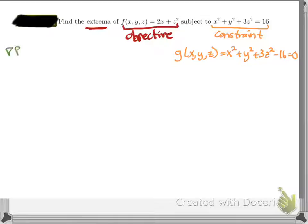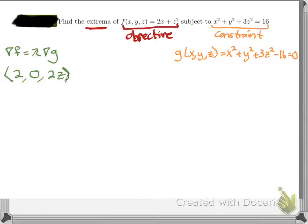We've got the gradient of f is equal to lambda times the gradient of g. So let's find our gradient. In this case, the gradient of f has partial with respect to x, partial with respect to y, and partial with respect to z as a vector — equals lambda times the gradient of g, with partials with respect to x, y, and z.